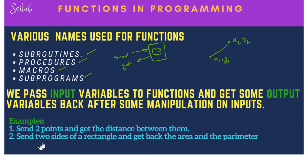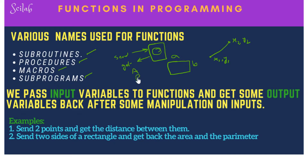Another example could be a rectangle with two sides, side a and side b. We send these two variables to a function and get back both the area and the perimeter. So you can get one value from a function, or you can get more than one value.